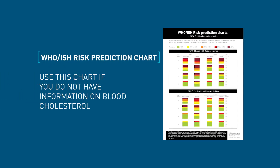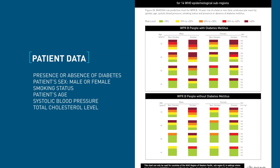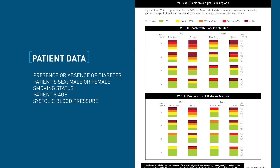The chart used when blood cholesterol cannot be measured is less accurate than the one with cholesterol, but still provides an option for treating a patient based on risk of developing a heart attack or stroke. To use this chart, follow the same steps as for the previous chart, except that in the last step you only look for the cell with the individual's level of systolic blood pressure.